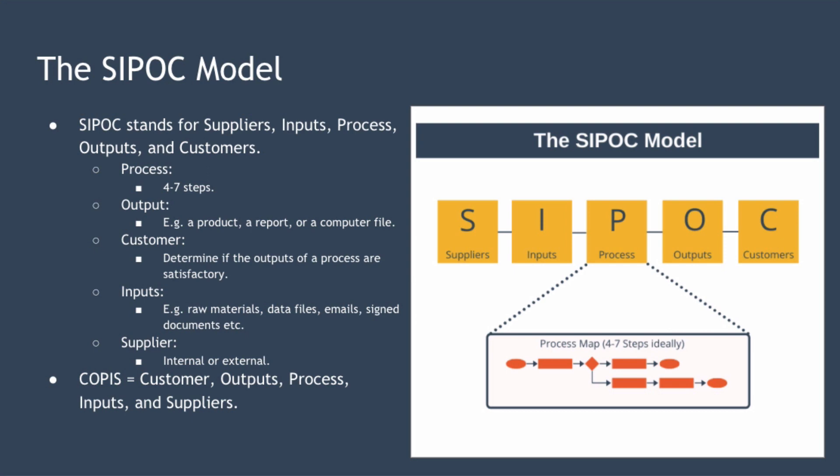If you find you've used more than seven steps to describe your process, you can try to amalgamate several steps together into one, or you could try to break a process out so it spans multiple SIPOC documents. Next we have Output — the output from the process will be one or more products or services, such as a manufactured product, a report, or a computer file. Next we have Customer. The customer receives the outputs of the process and could be a person, an organisation, or even another process. Customers are important as they determine if the outputs of the process are satisfactory.